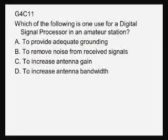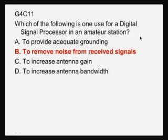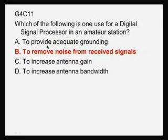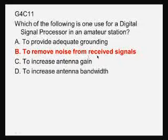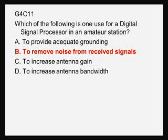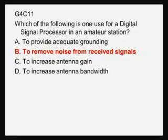Which of the following is one use for a digital signal processor in an amateur station? Digital signal processing has been discussed before. The use is to remove noise from received signals. We've seen several ways of doing it: using a notch to remove an unwanted signal, shifting the IF passband to remove unwanted noise, and making the bandwidth narrower to cut out noise.